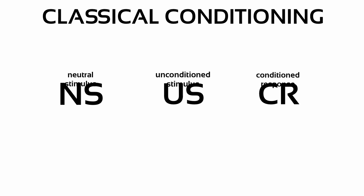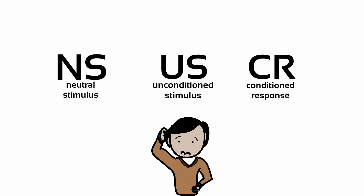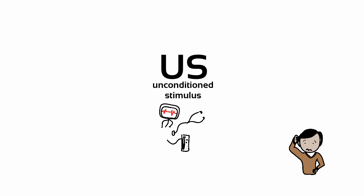Classical conditioning can be used to explain many everyday applications. Sometimes people who are undergoing chemotherapy develop an aversion to foods that they've eaten right before their treatment. Chemotherapy naturally produces nausea, so chemotherapy is the unconditioned stimulus and nausea is the unconditioned response.